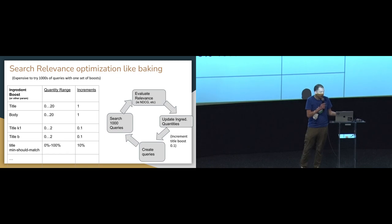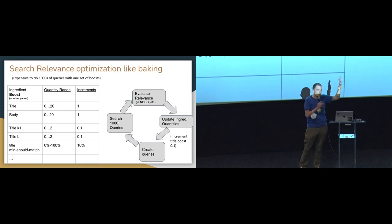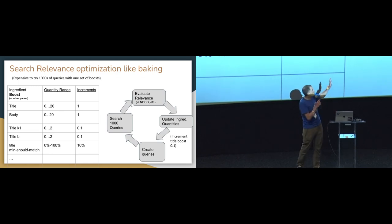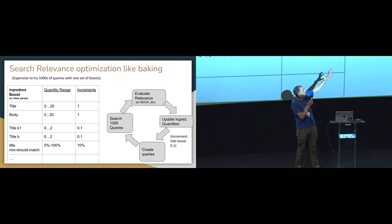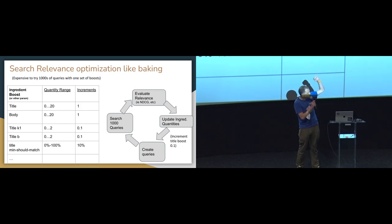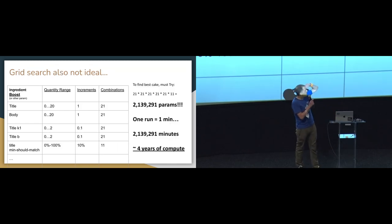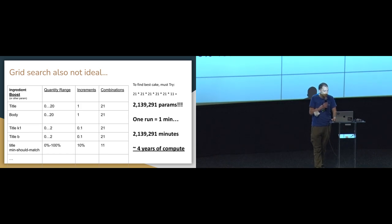Search relevance optimization is a lot like baking. Instead of ingredients, we have boosts, BM25 parameters, minimum should match, fuzziness values — all things we want to vary during our optimization run. We might need to search a representative set of queries and evaluate relevance using a good set of judgments. If we did a grid search on this, with one run per minute, it would take about four years. Grid search is usually not preferred, although it is easy to implement, and we do it sometimes.